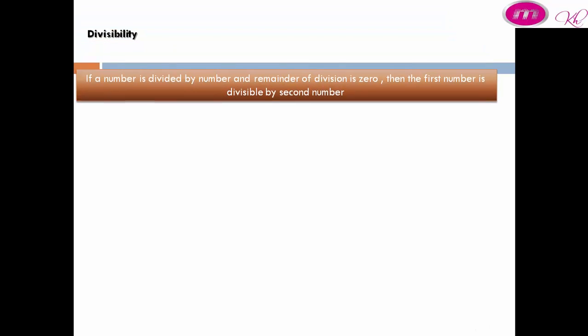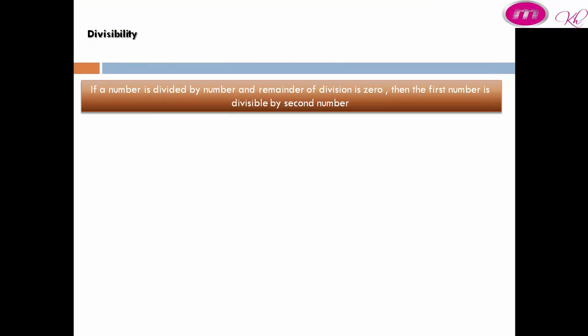Divisibility: what is divisibility? If a number is divided by another number and the remainder of the division is zero, then the first number is divisible by the second number. For example, 15 divided by 3 equals 5, so 15 is divisible by 3, and 15 is also divisible by 5.